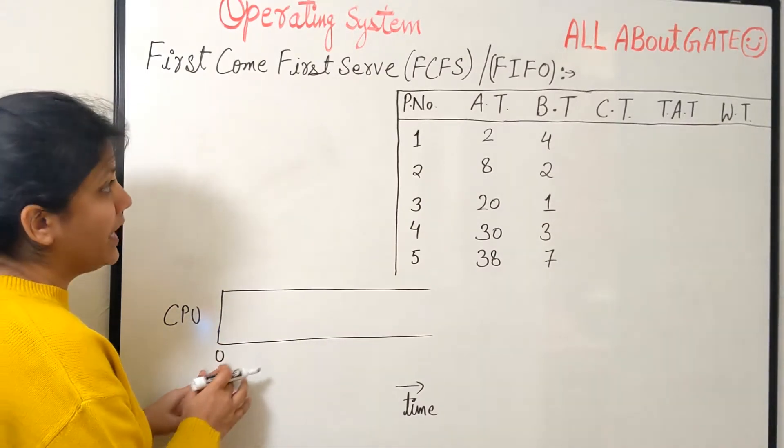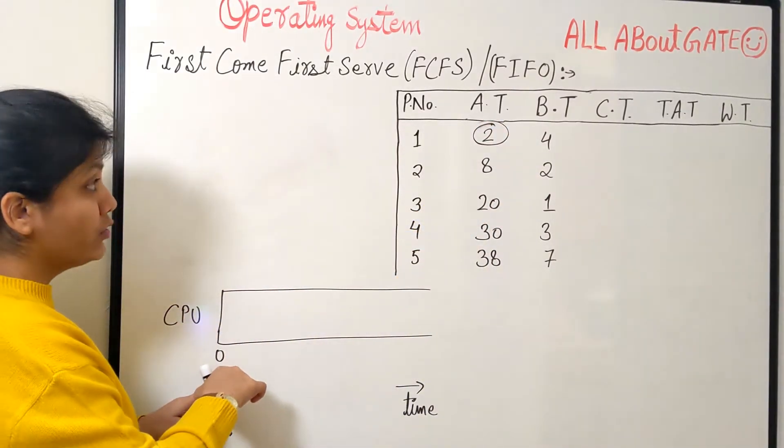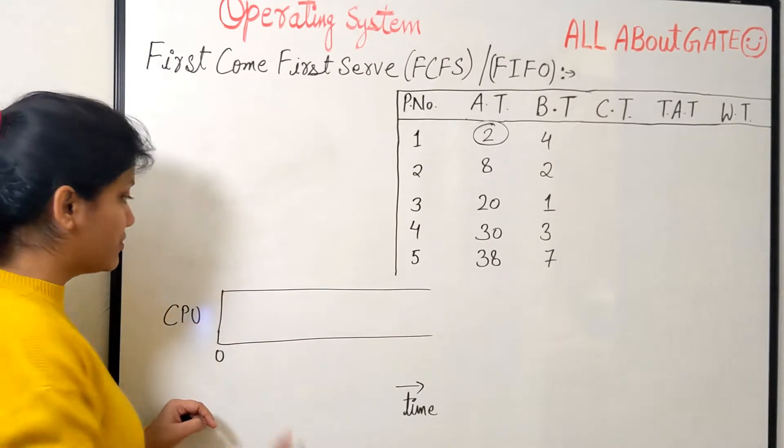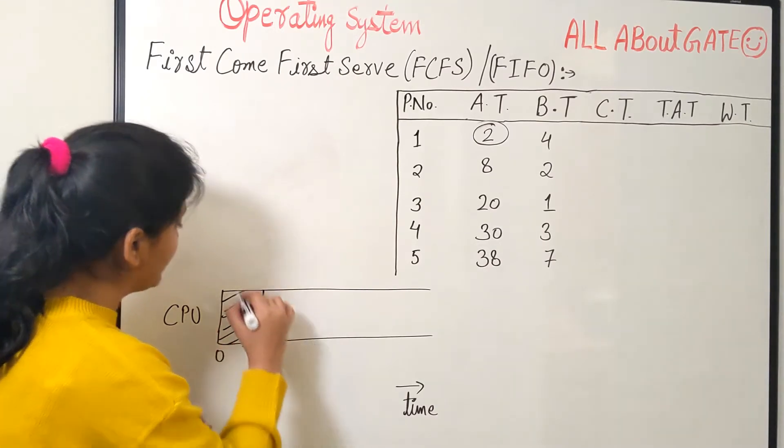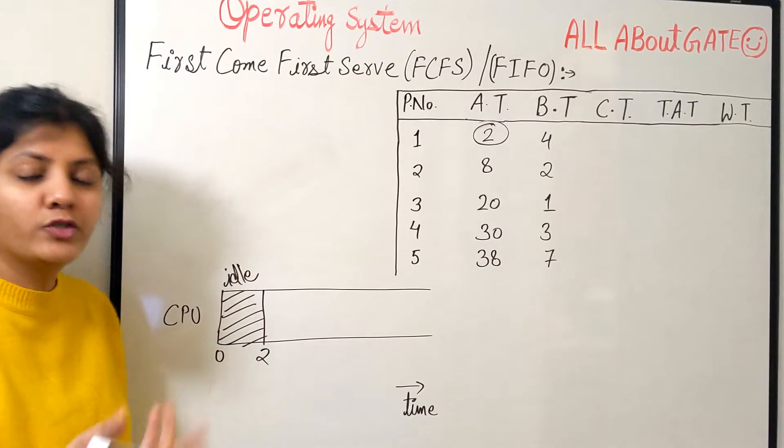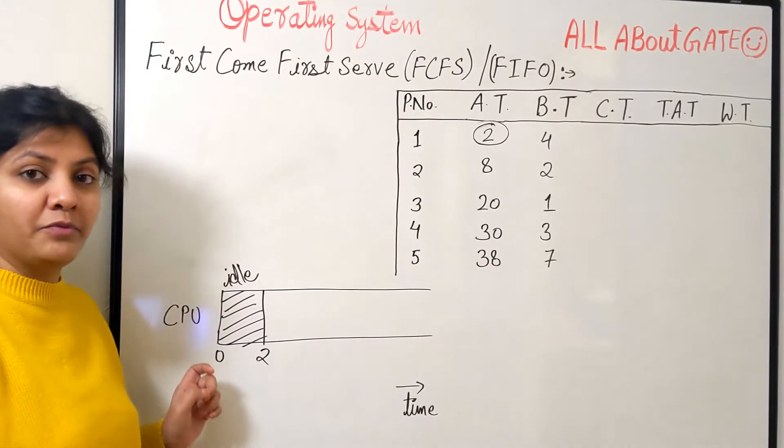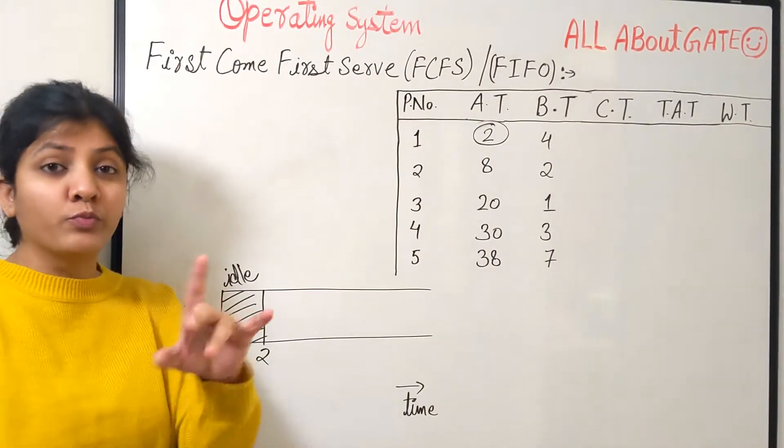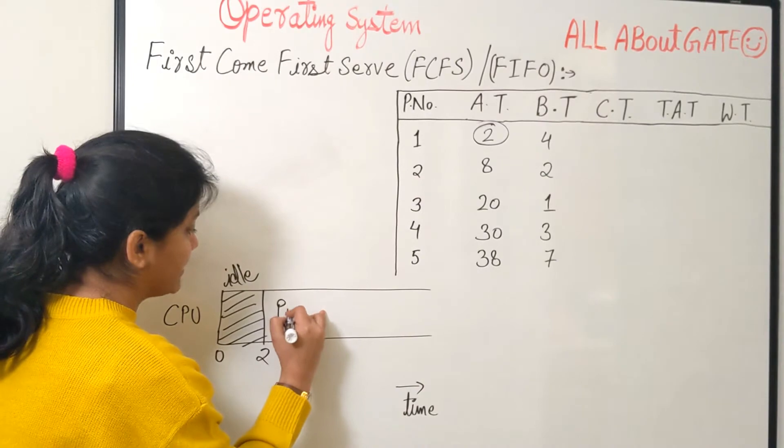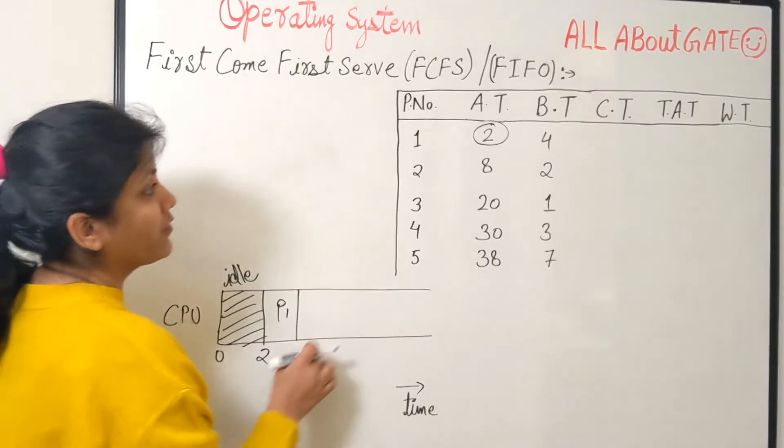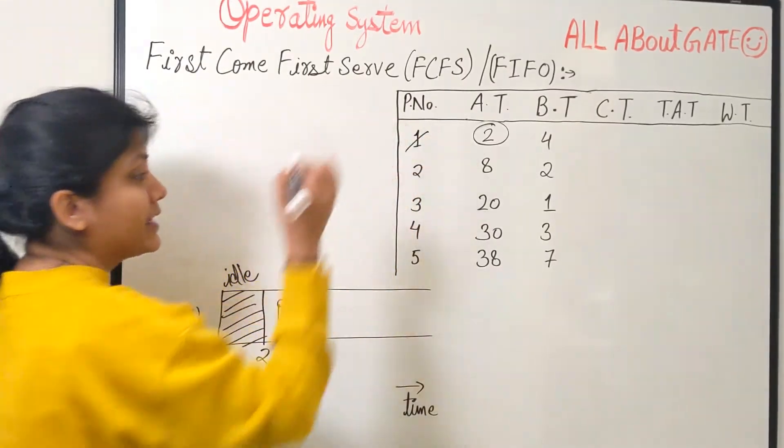So the very first time is time 0 and the first process, look at the minimum arrival time that is time 2. From time 0 to time 2 we don't have any process in the system, so your CPU becomes idle. It has nothing to execute. At this moment of time throughput is actually 0. At time 2 process P1 comes. So let's take process P1 and schedule it for the amount of time it requires. It requires 4. 2 plus 4 becomes 6 and the P1 gets completed.